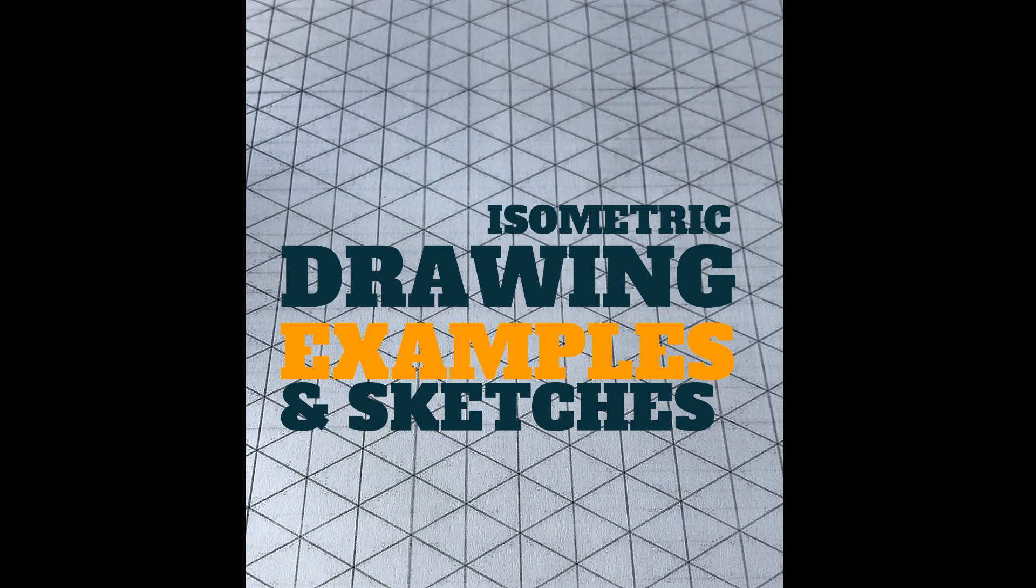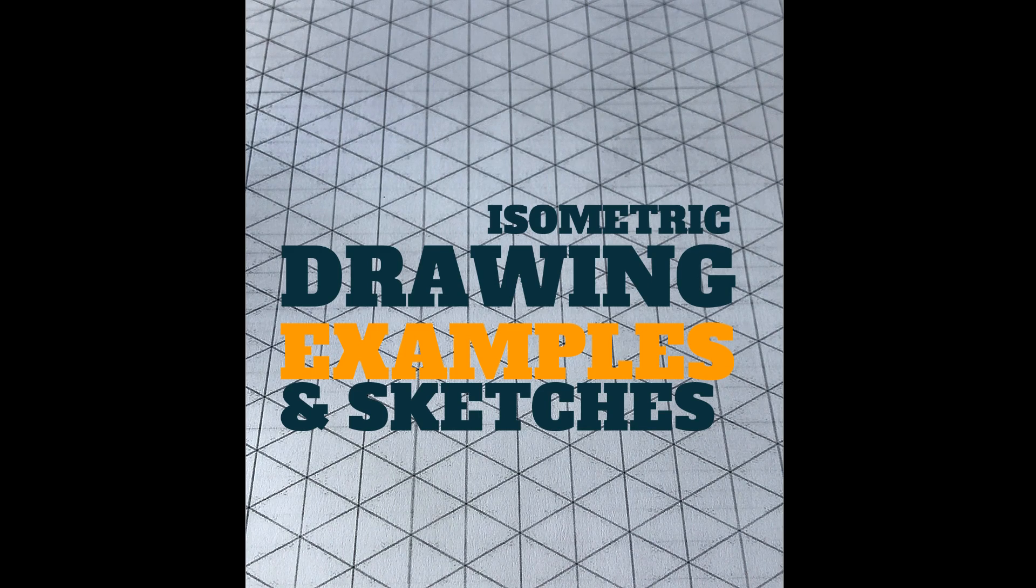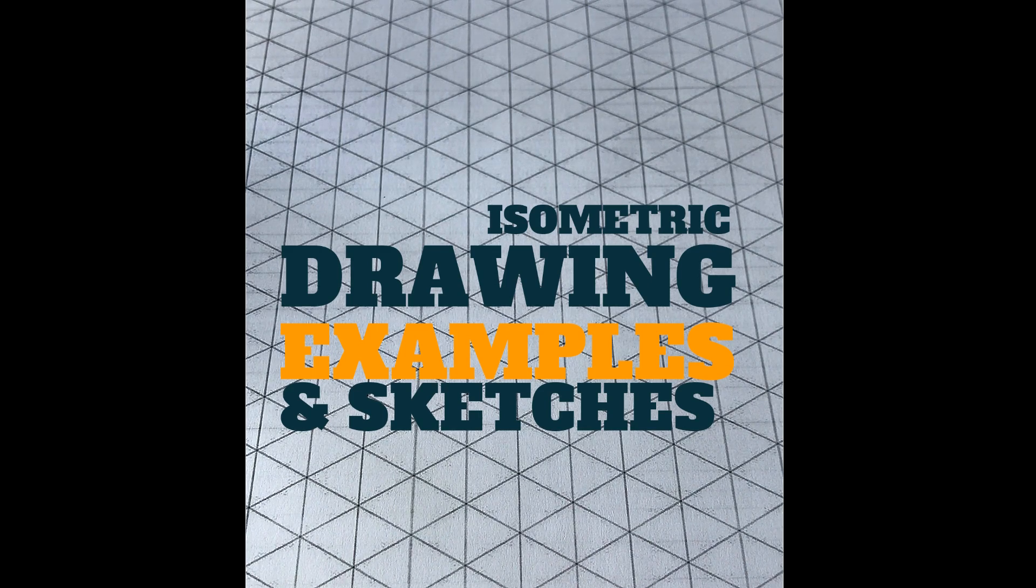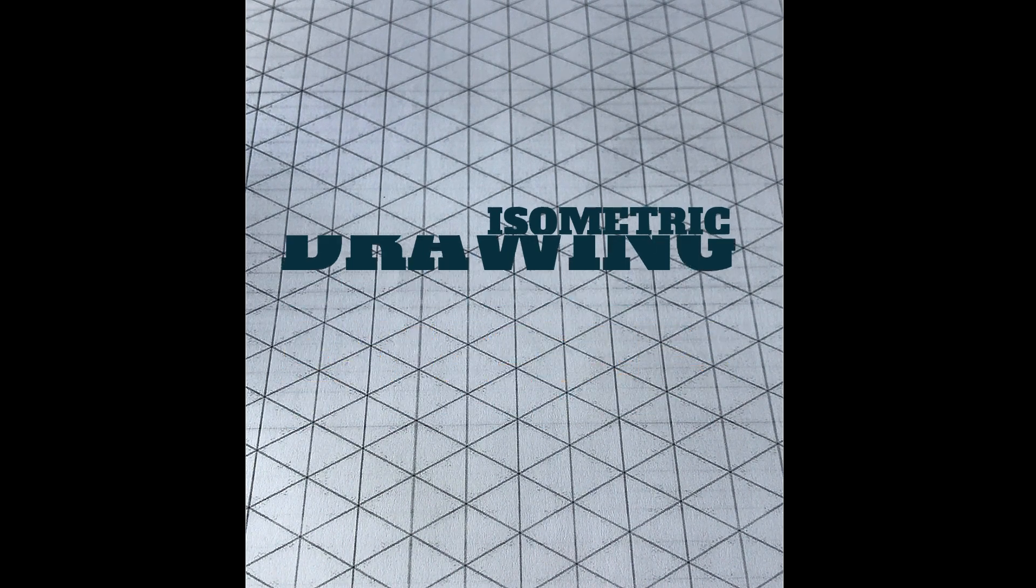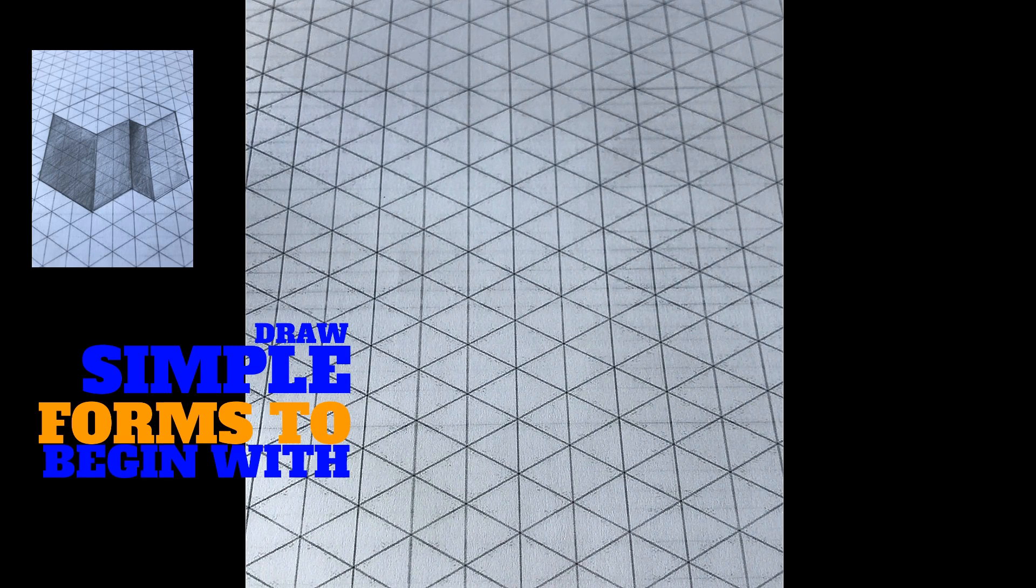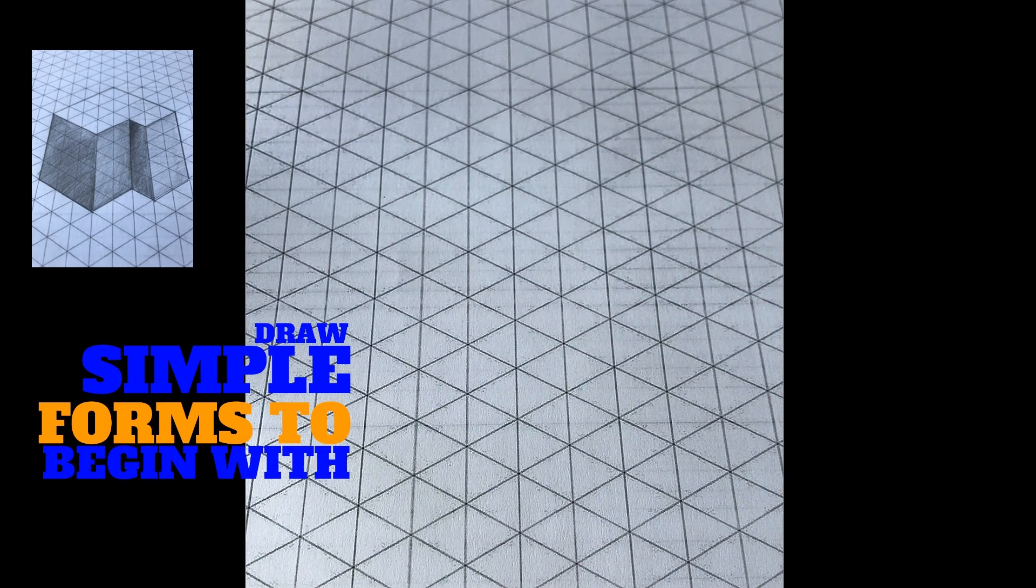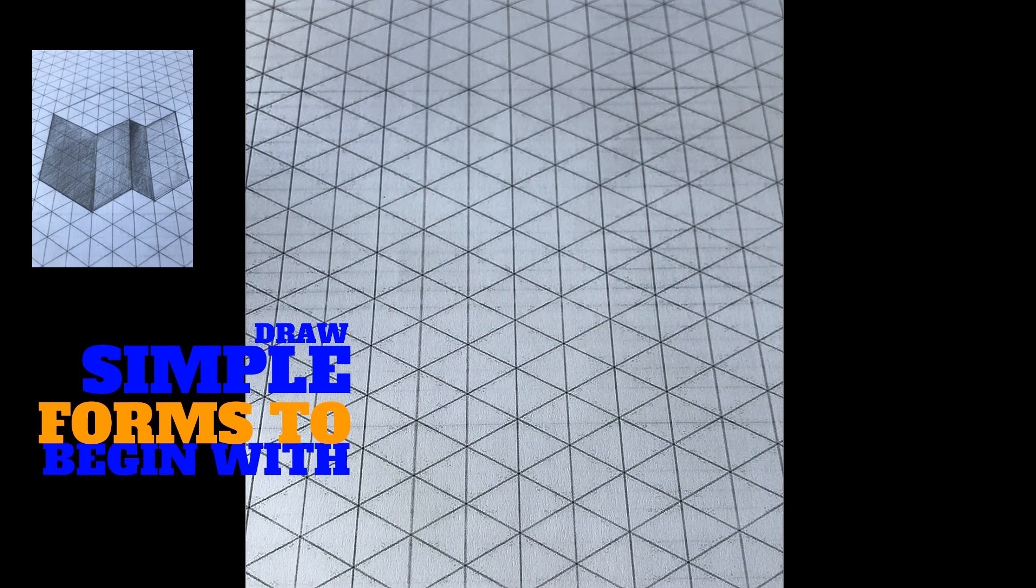Okay, now the first technique I'm going to show you today is how to draw using isometric paper. This is probably one of the simplest methods you can use to create an isometric drawing. Once I've drawn the form and shape of this object, I will add shading.